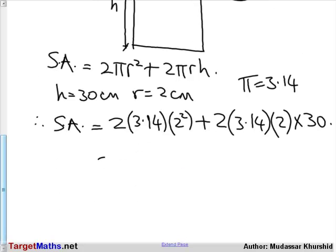Putting all this together, we end up with 2 times 12.56, plus 2 times π, 3.14 times radius, which is 2 times h, which is 30.